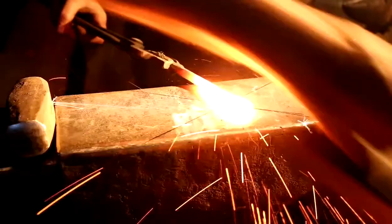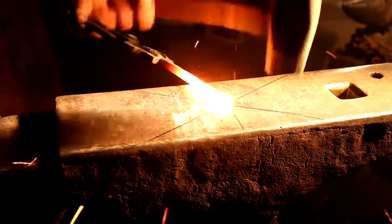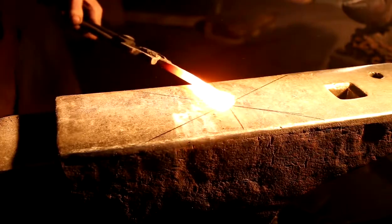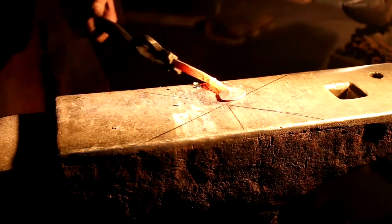He brushes impurities from the surface of the heated metal and then, holding the bar against his anvil, strikes the metal repeatedly to flatten one end. The flat disc will eventually become the foot of a candlestick.